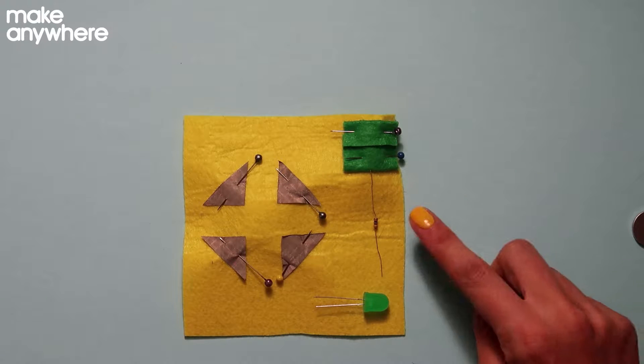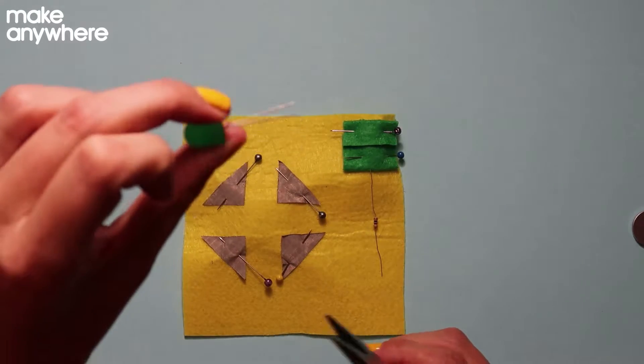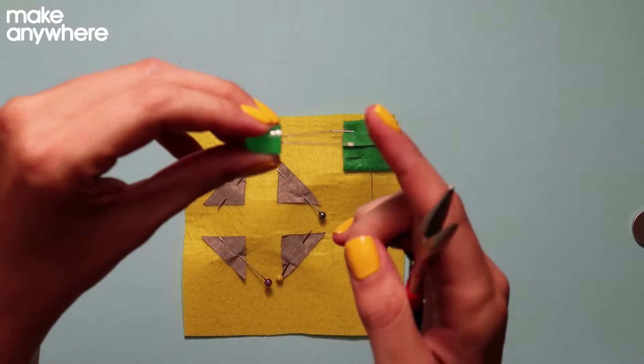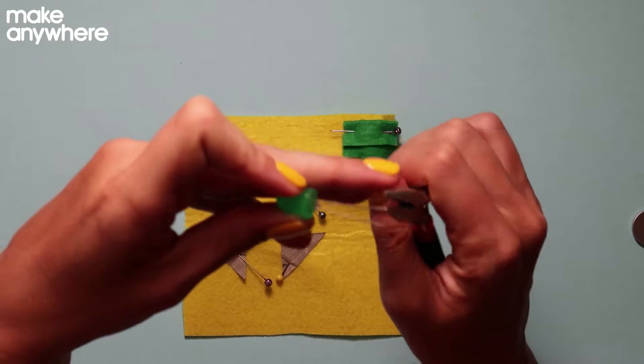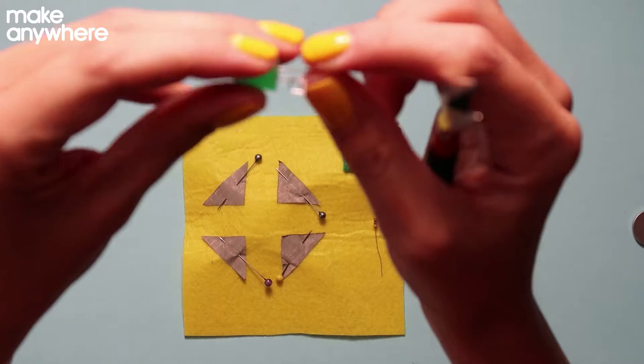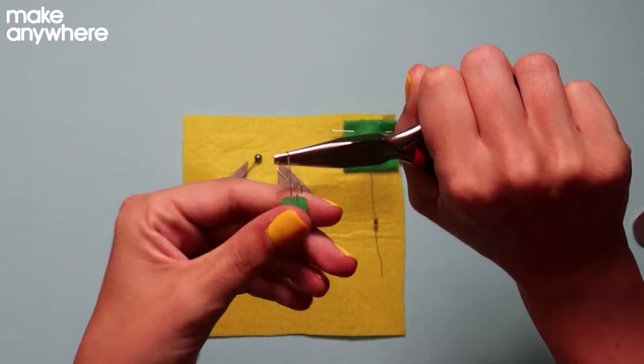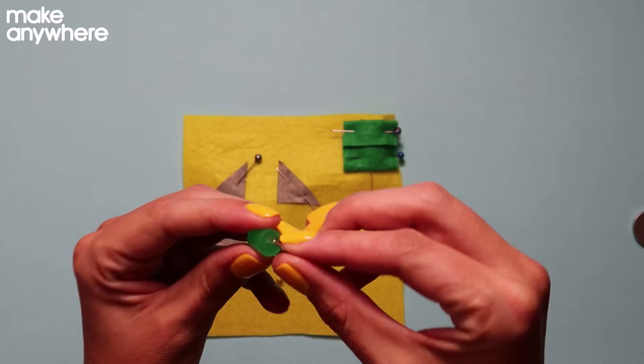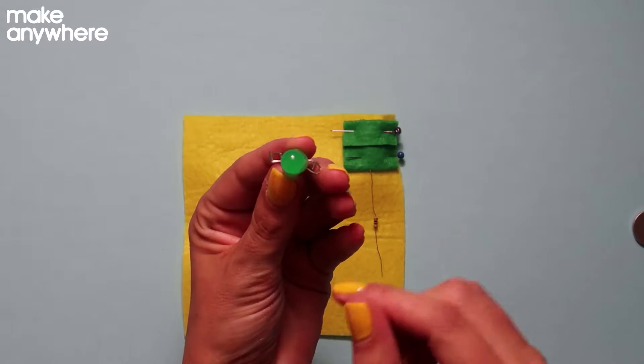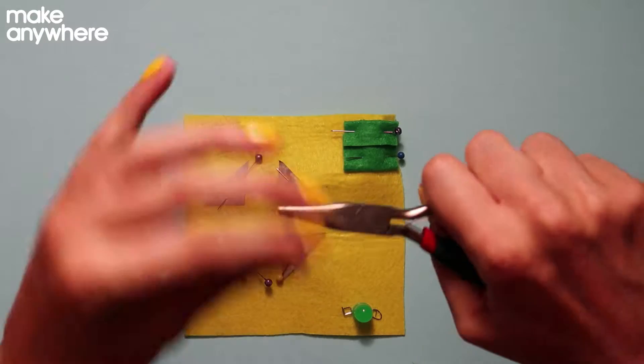Let's prepare the LED and resistor. Take your pliers and figure out which one is the positive leg and which is the negative. Positive is always the longer one. Negative the shorter. We're going to turn the negative one into a square and the positive into a circle. Great. So when you look down onto your LED, your negative will be a square and your positive will be a circle. Now your resistor, turn both legs into circles.